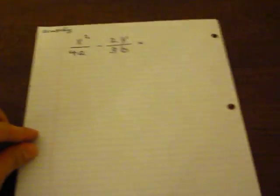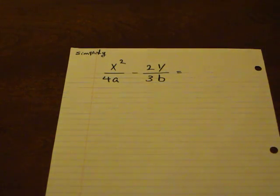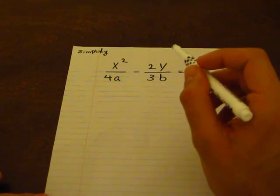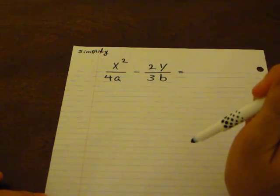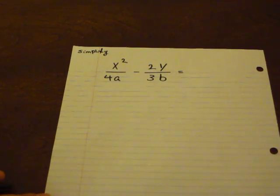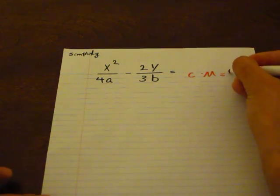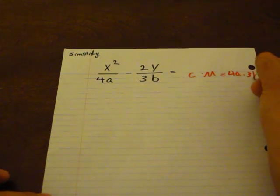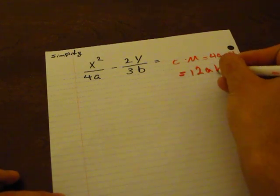Let's move on to the last question for this lecture. I'm going to simplify the expression: x squared over 4a, minus 2y divided by 3b. The important thing here is that we need to find a common denominator, because 4a is not equal to 3b. So my common denominator is 4a times 3b, which is equal to 12ab.